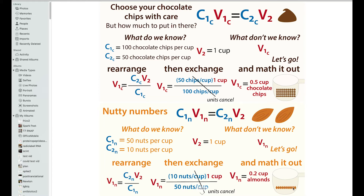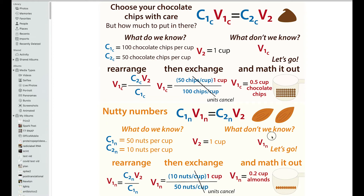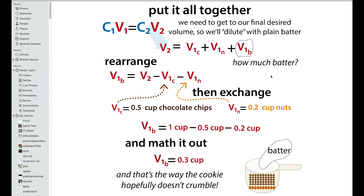We know how much almonds and how much chocolate chips to add, but we still need to reach that final volume. We need to dilute it with plain batter — the batter is like our water here. We take the final volume (one cup), subtract the volumes we found, so one cup minus half a cup minus 0.2 cups, and we get 0.3 cups of batter. And that is the way that the cookie hopefully doesn't crumble.